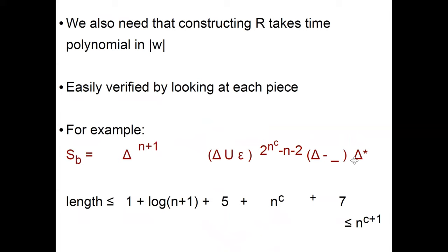We also need to show that constructing R takes time polynomial in the input length. This can be verified similarly to previous reductions. For each piece — for example Sb — those large numbers are written in binary, so the binary representation only takes a number of symbols polynomial in n. We're able to write down everything in a number of symbols polynomial in the input length, and this is what we need.